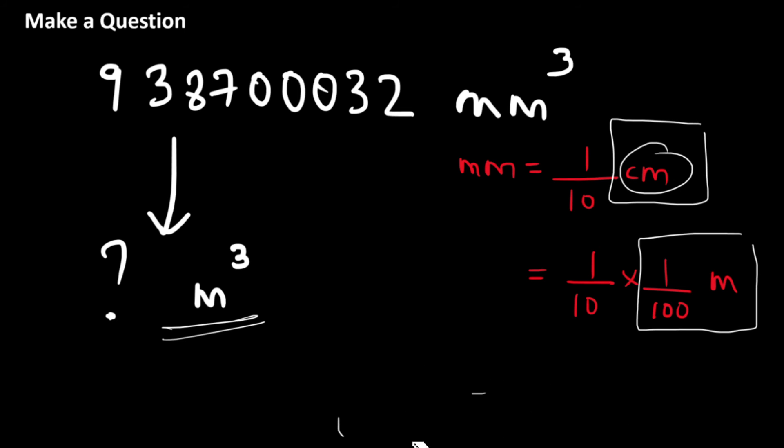Now, when you do this multiplication, you will see that you will have 1 by 1000, that is, you'll have three zeros in the denominator. Now, because we have millimeter cube over here, we have to do this three times. So we have to do 1 by 1000 into 1 by 1000 into 1 by 1000. So that will give us a number which has nine zeros. So it's one followed by nine zeros in the denominator.